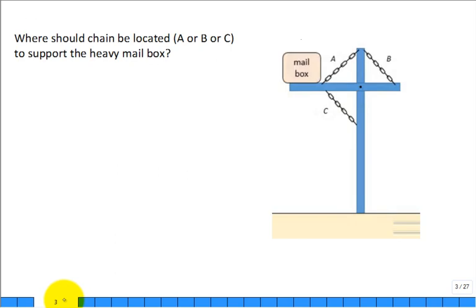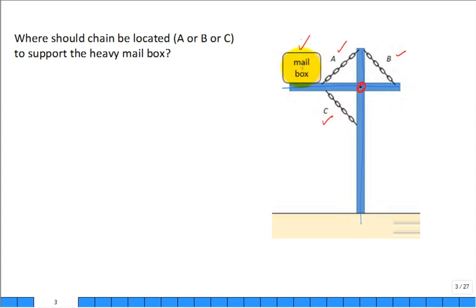Here's a general question to get us started. We have a post set in the ground with a cross member bolted in the middle, used to support a heavy mailbox at the end. You can put a chain in location A, B, or C — but only one location. Where would you put it? That heavy mailbox is going to want to rotate around the bolt point, making the horizontal support beam rotate. To support it, you want to pull back. Putting the chain at C or B won't work — putting it at A is the right answer.